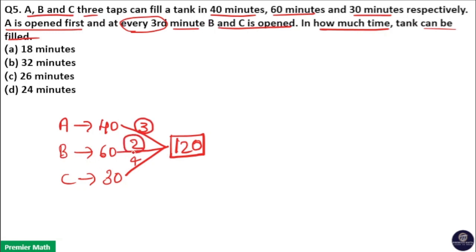A's efficiency three means A can fill three liters in one hour. B's efficiency two means B can fill two liters in one hour. C's efficiency four means C can fill four liters in one hour. And the question says A is opened first.